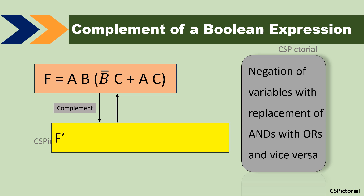Here, A becomes A bar. The AND operation becomes OR. B becomes B bar. Again, product becomes OR operation. B bar becomes B, C becomes C bar, plus becomes dot. A becomes A bar, C becomes C bar. This is the complement of the given Boolean expression.